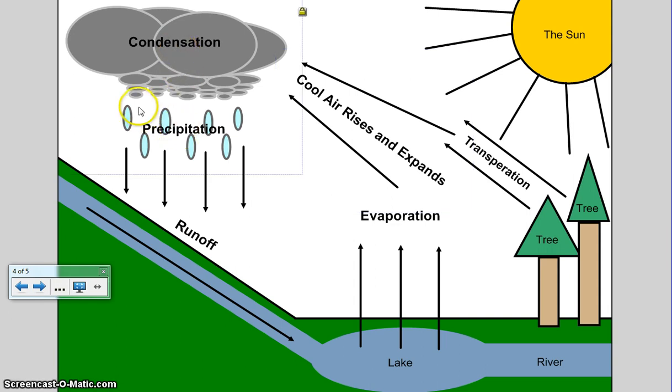After condensation, once the water vapor reaches the dew point, it precipitates, forming more runoff into more bodies of water. This completes the water cycle.